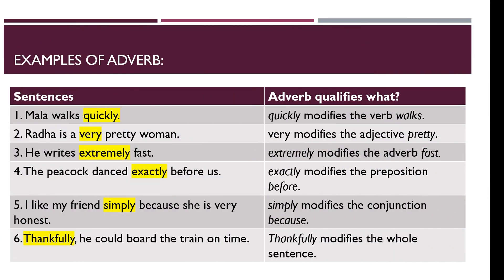Now let's look at examples of adverbs. On the left side we have sentences, and on the right side we see what the adverb is qualifying. The first sentence is: 'Mala walks quickly.' Here, 'walks' is the verb, and 'quickly' is the adverb that modifies the verb 'walk' — meaning she walks fast.